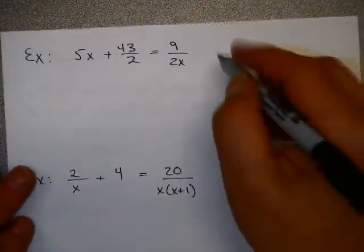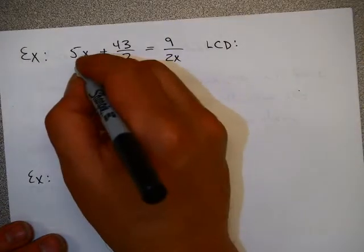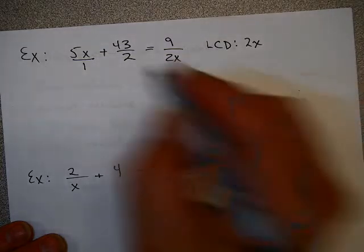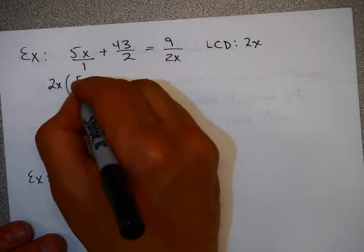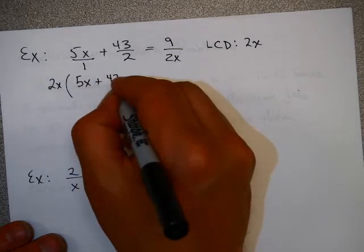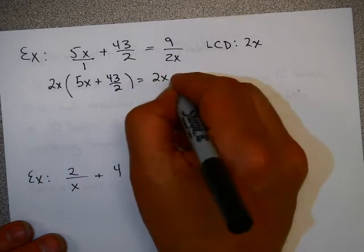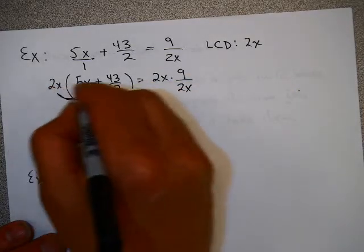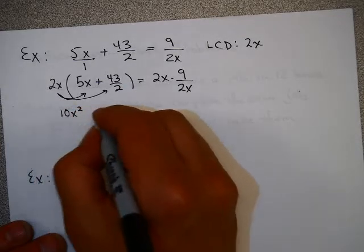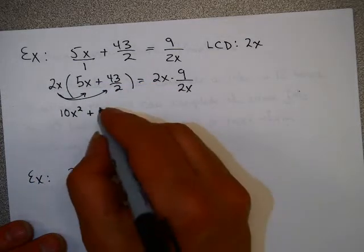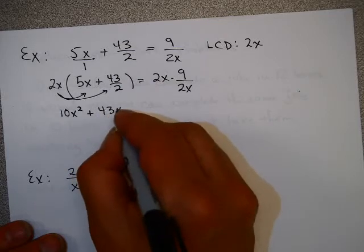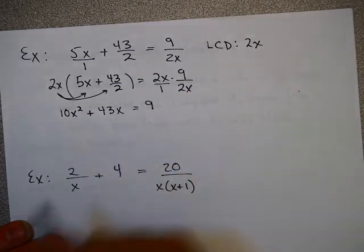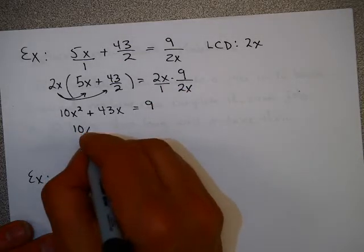Here's one a little bit more difficult. The lowest common denominator here, notice these, is 2x. So I'm going to multiply 2x on the left-hand side and 2x on the right-hand side. Don't forget the distributive property. 2x times 5x is 10x². 2x times 43/2 gives me 43x. 2x's cancel or divide out here and I get 9. This is a quadratic equation. You are experts now, especially after last chapter, in solving quadratic equations.